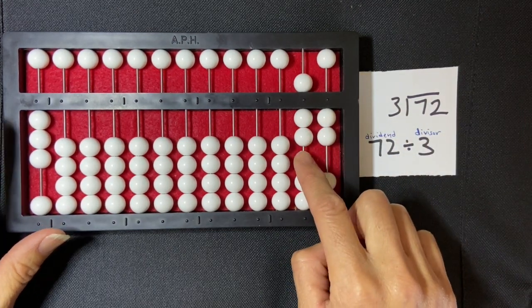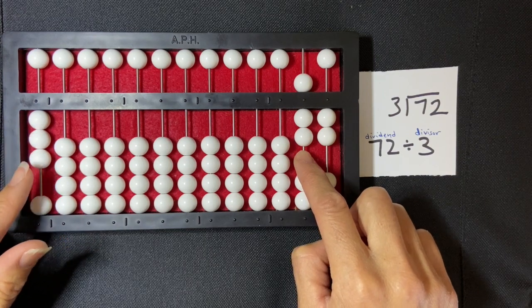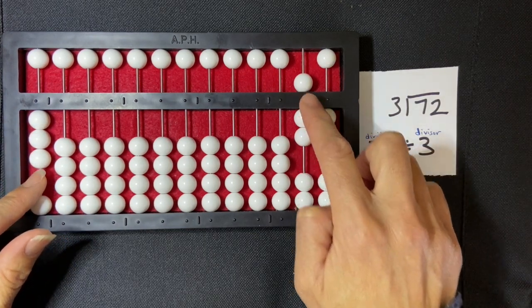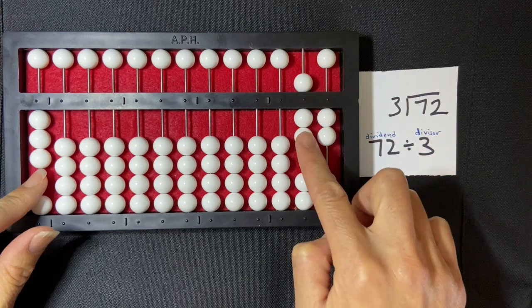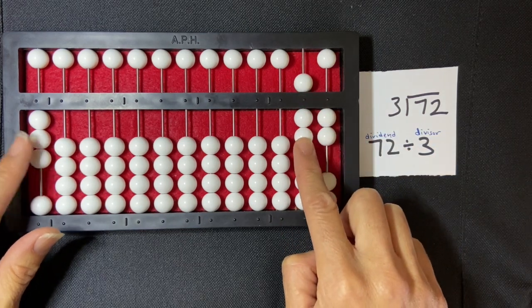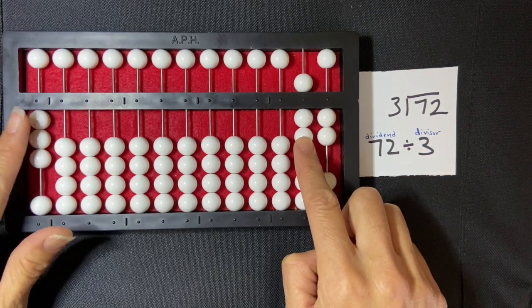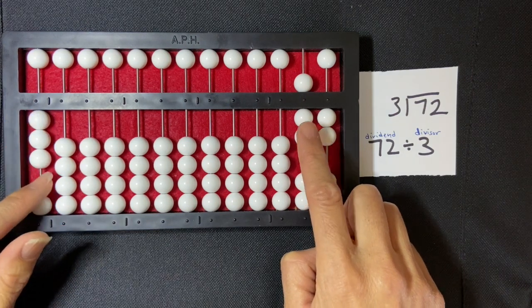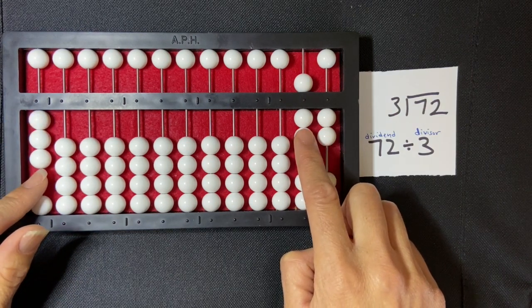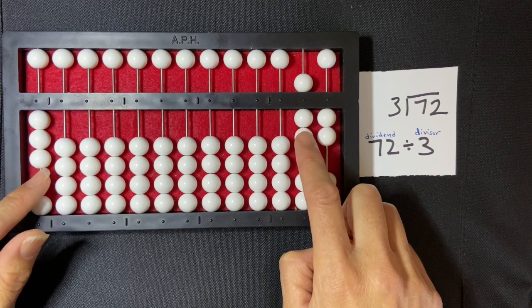So now I need to divide, but first I need to compare. So I'm going to compare the seven in my dividend with the three. So the three is smaller than the seven, so my divisor is smaller than the first number in my dividend.